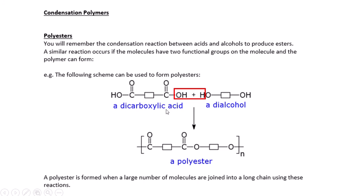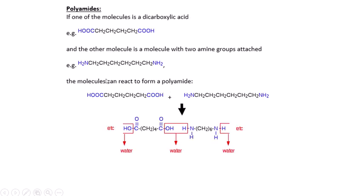To represent the polyester we look at the repeating unit. We take away the water to form the ester bond, then at either end of the repeating unit we remove the OH from the acid on one side and the H from the alcohol on the other, extending those bonds. This repeating unit then continues n times to give the structural formula of the polyester.